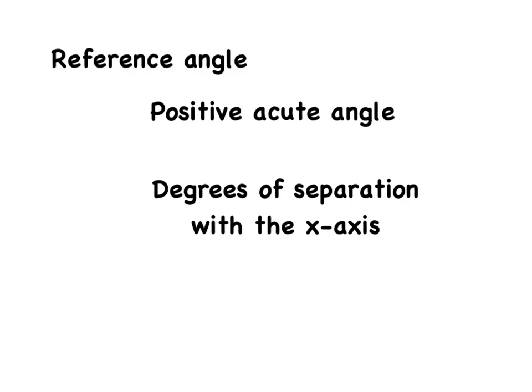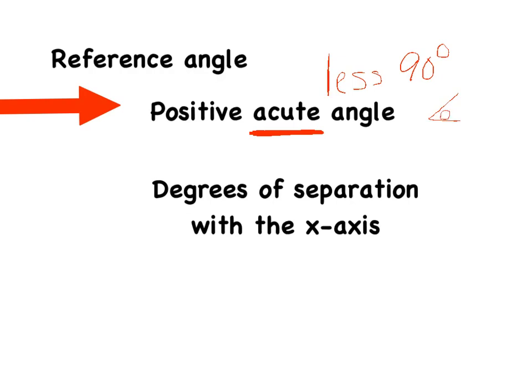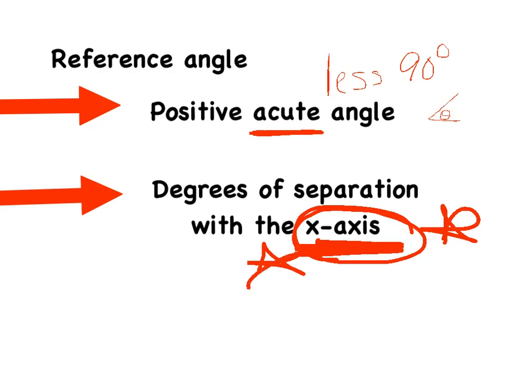First of all, write down two definitions. A reference angle has to be a positive acute angle. Acute means an angle less than 90 degrees — smaller than a right angle. The second definition is how we find it: basically, you want to find the degrees of separation with the x-axis. I can't stress enough — bold this word x-axis, circle it, star it, highlight it. We are strictly talking the x-axis, never, ever the y-axis.